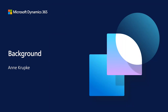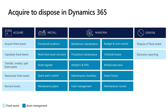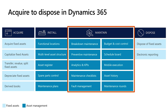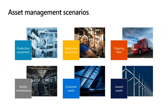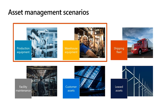Let's refresh our background on asset management. This is the acquire-to-dispose lifecycle introduced in our overview session: inquire, acquire, install, maintain, and dispose of assets. We covered acquire and install in a deep dive session last month; this month we are covering the maintain steps. Asset management functionality supports many scenarios, ranging from production and warehouse equipment to shipping fleets, facility maintenance, customer assets, and leased assets. In this tech talk, we are focusing on production equipment and warehouse equipment scenarios.